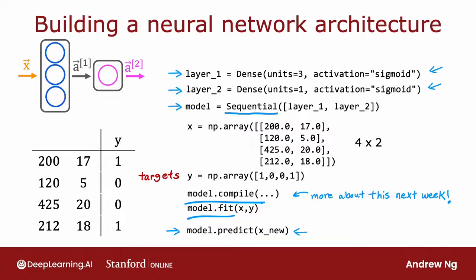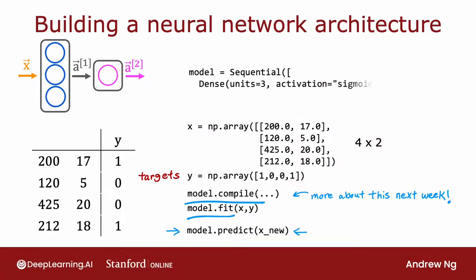Now, I want to take these three lines of code on top and just simplify it a little bit further, which is when coding in TensorFlow, by convention, we don't explicitly assign the two layers to two variables, layer one and layer two, as follows. But by convention, I would usually just write the code like this. We say the model is a sequential model of a few layers strung together sequentially, where the first layer, layer one, is a dense layer with three units and activation of sigmoid, and the second layer is a dense layer with one unit and again a sigmoid activation function. So if you look at others' TensorFlow code, you often see it look more like this, rather than having an explicit assignment to these layer one and layer two variables.